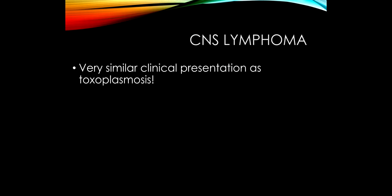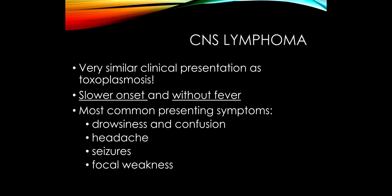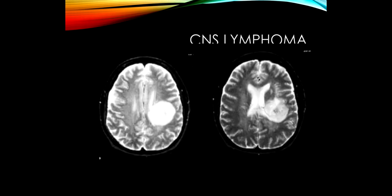If the patient isn't getting better with treatment for toxoplasmosis, the next most likely diagnosis is CNS lymphoma, which has a very similar presentation — but a little bit slower onset and without fever. Patients also have some brain swelling, so they'll have drowsiness, confusion, and headache; seizures and focal weakness are also seen — features really indistinguishable from toxoplasmosis.